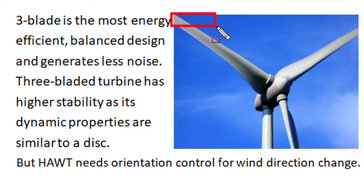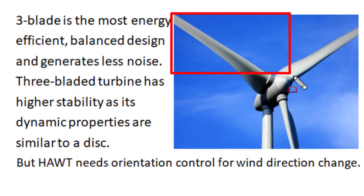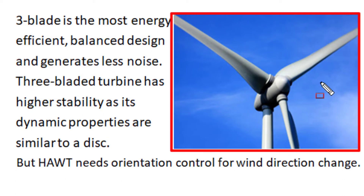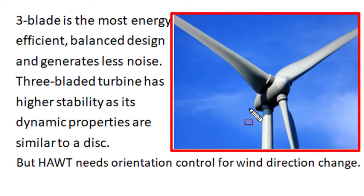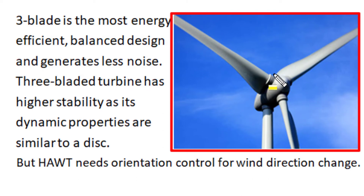Almost all horizontal axis wind turbines have a three-blade design. The three-blade horizontal axis wind turbine is the most energy-efficient and balanced design — it generates less noise during rotation. In fact, the three-blade design has higher stability because its dynamic properties during motion are similar to a balanced disc.